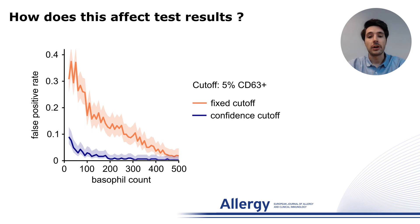If we now account for the variability that comes from having a limited number of basophils, we can integrate this aspect into our cutoff and keep false positives at a minimum even with few basophils.